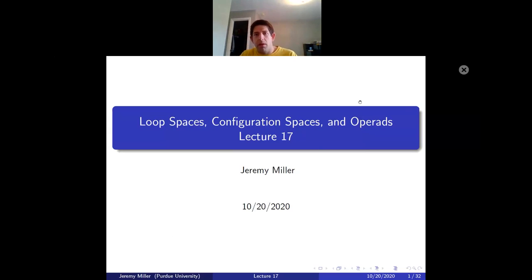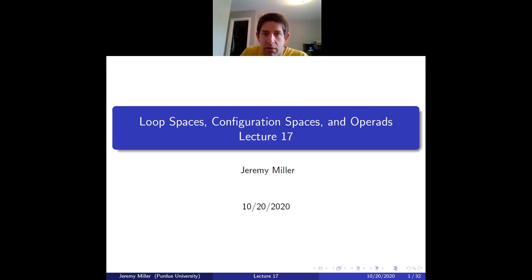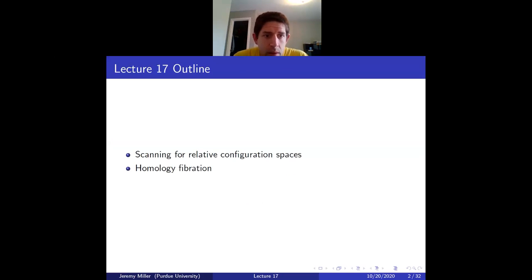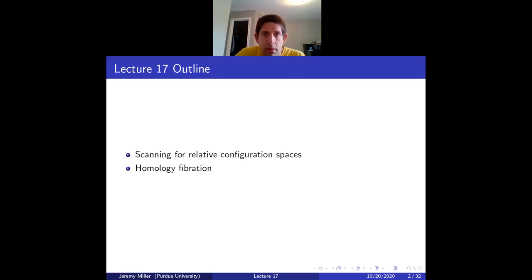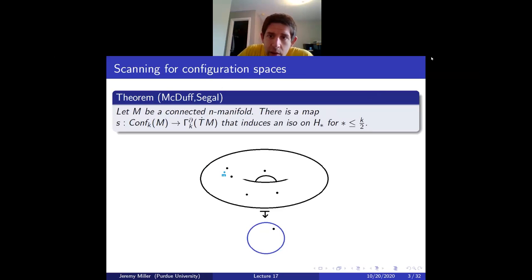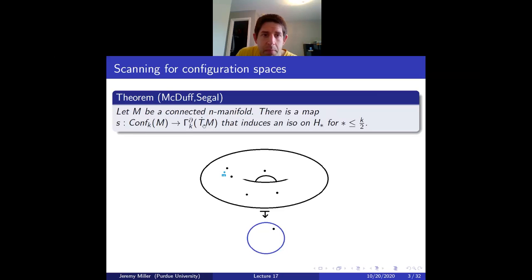Today I'm going to sketch the proof that the scanning map from configuration spaces to the space of sections is a homology equivalence in a range. We'll sort of talk about relative configurations, then homology fibrations, and prove the theorem. The main theorem is that the scanning map from the space of configurations of K unordered distinct points in the manifold goes to the space of degree K sections of the fiberwise one-point compactification of the tangent bundle.